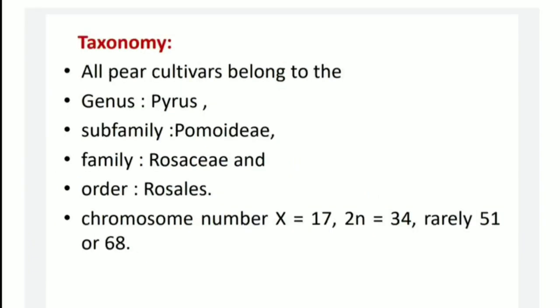Now Taxonomy. All pear cultivars belong to the genus Pyrus, subfamily Pomoideae, family Rosaceae, and order Rosales. The chromosome number is 17, with 2n equal to 34, and rarely 51 or 68.